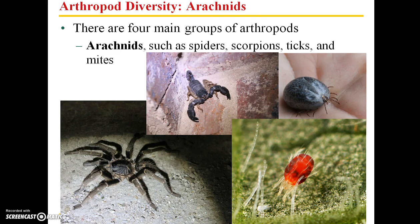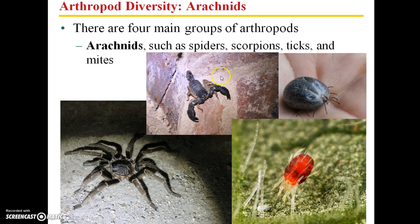There are many different categories within the Arthropoda phylum. There are the arachnids — several examples are shown here: a tick, a mite, a baboon spider from South Africa, and also a scorpion, also from South Africa.